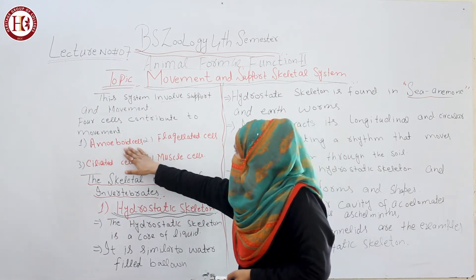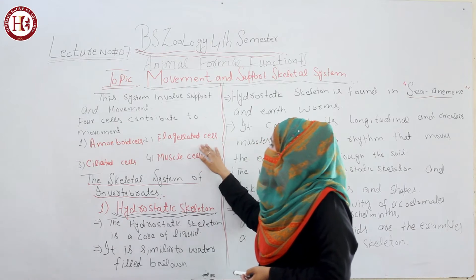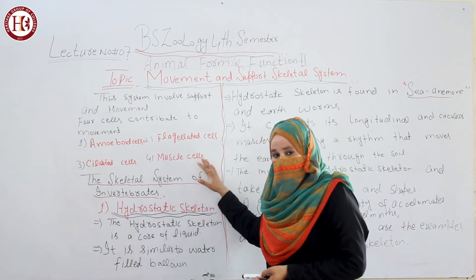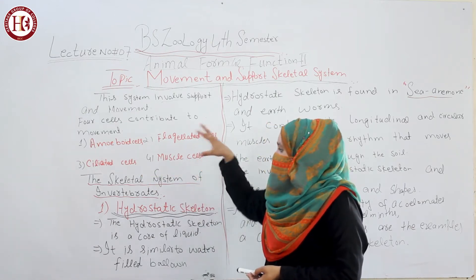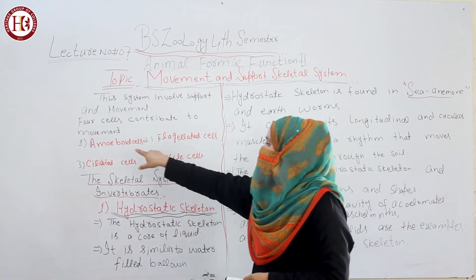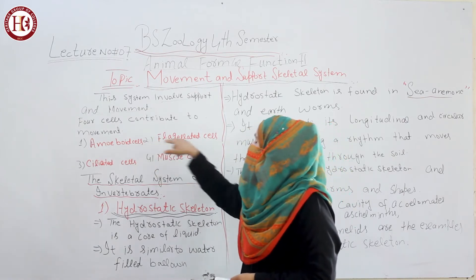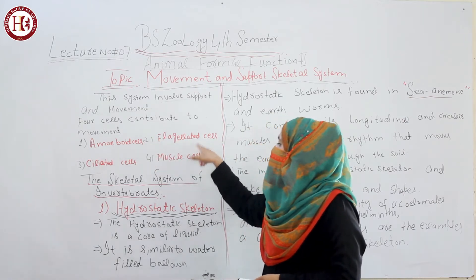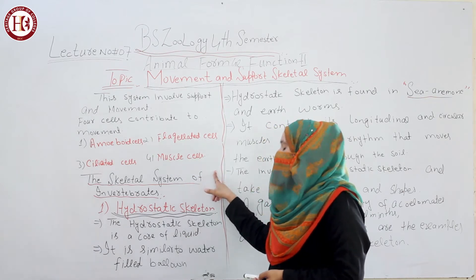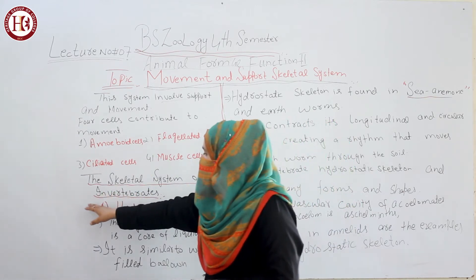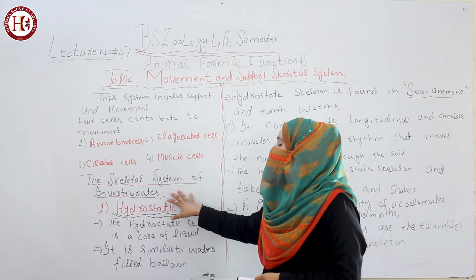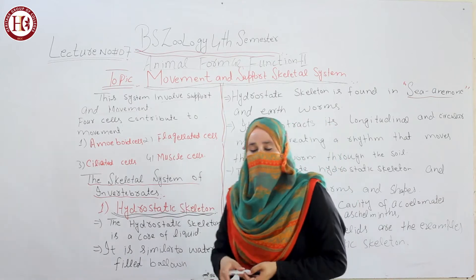The 4 cells involved in the procedure of movement are: amoeboid cells, flagellated cells, ciliated cells, and muscle cells. Today our main topic is the skeletal system of vertebrates and invertebrates.